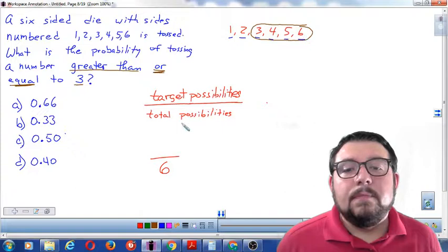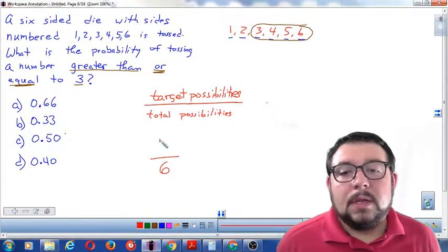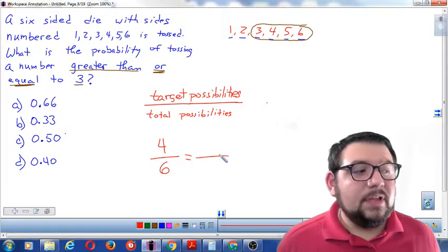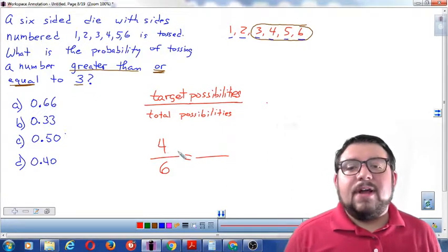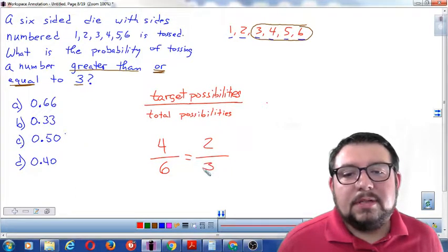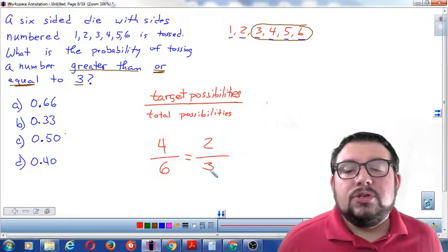Each one of those would be greater than or equal to 3. So how many are those? 1, 2, 3, 4. 4 out of 6. So that's my probability. However, ever since elementary school, they've probably been telling you, you cannot have a fraction and not simplify. So we're going to divide by 2 and divide by 2. And now we have 2 thirds.